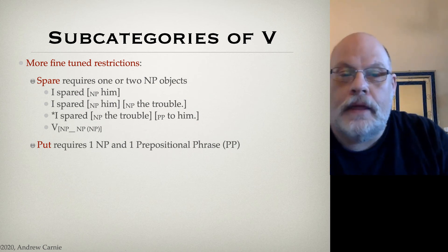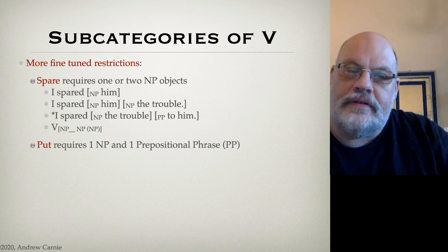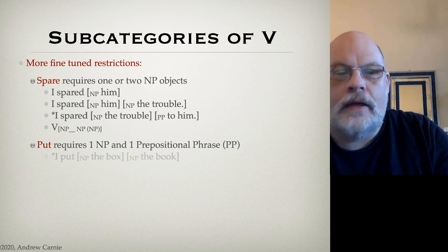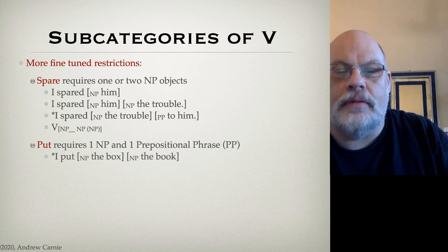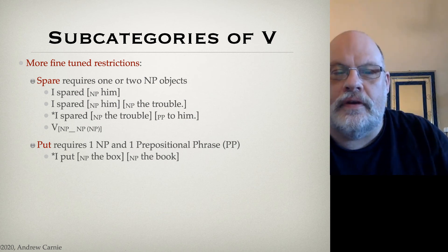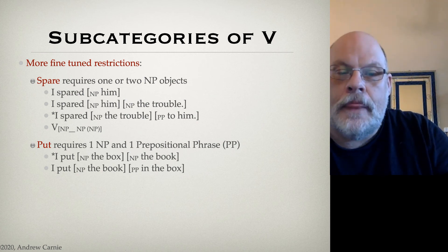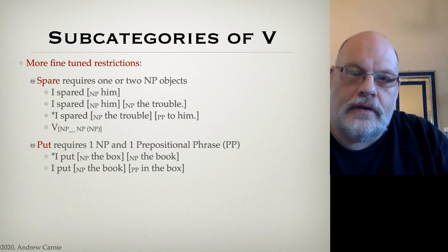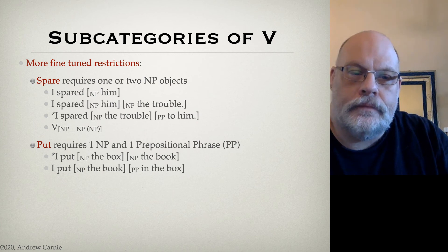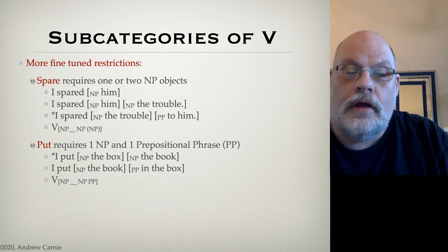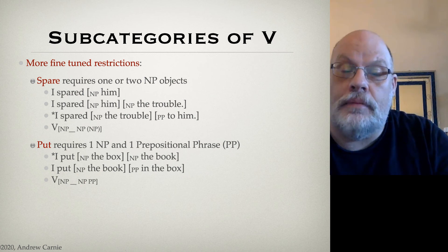Let's take put. Put requires a subject, and it requires a noun phrase object and a prepositional phrase as well. You can't say I put the box the book — you can't use the same structure as spare. But you can say I put the book in the box — a noun phrase followed by a prepositional phrase. The feature structure for put has a noun phrase subject followed by the verb, followed by an obligatory noun phrase, followed by an obligatory prepositional phrase.